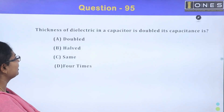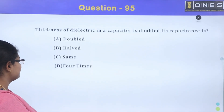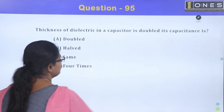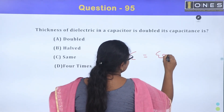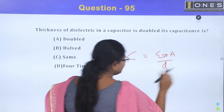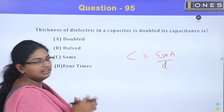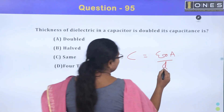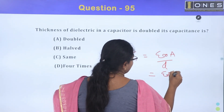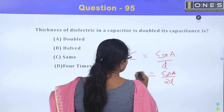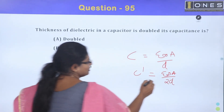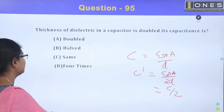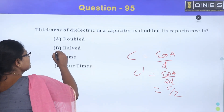Thickness of a dielectric capacitor is doubled. Its capacitance: Option A, doubled; Option B, half; Option C, same; Option D, four times. The capacitance formula is C = ε₀A/d. If thickness d is doubled to 2d, then C = ε₀A/2d, which is half the original. The answer is Option B, half.